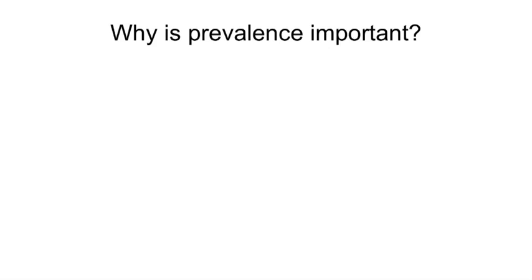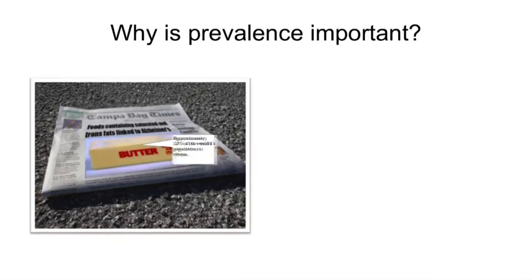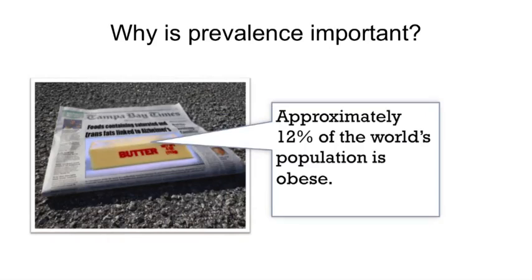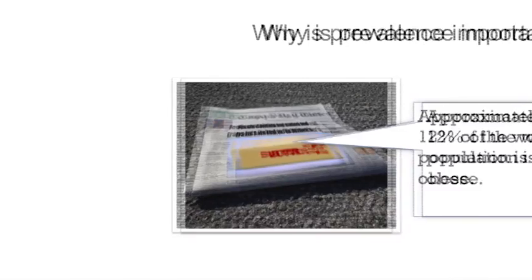Prevalence is one of the most common epidemiologic measures you see in our everyday news. You may see a news headline based on prevalence, such as the proportion of people in the population that are overweight. The measure prevalence helps us quantify the proportion of the population with a specific health outcome. For example, approximately 12% of the world's total population is obese.